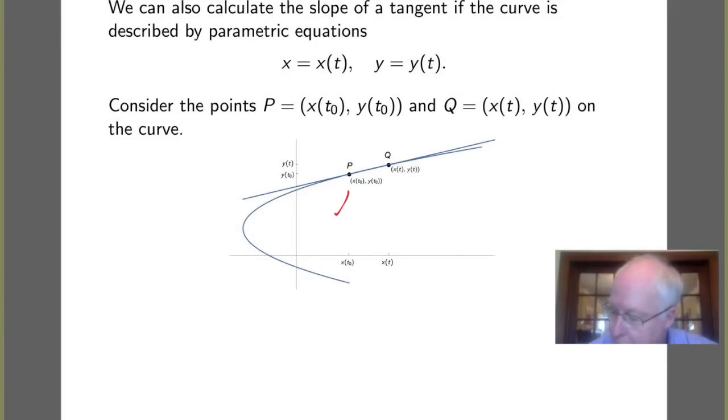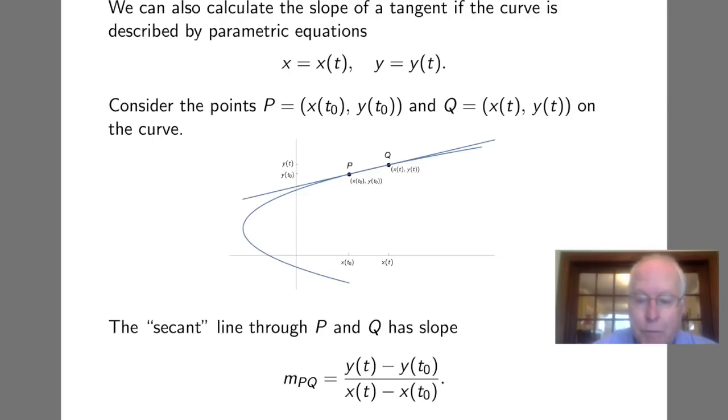In the picture we see point P here, which is going to be fixed. Our first step in finding a tangent was to take a second point Q and then draw the line through P and Q as you see here. This is the so-called secant line determined by P and Q.